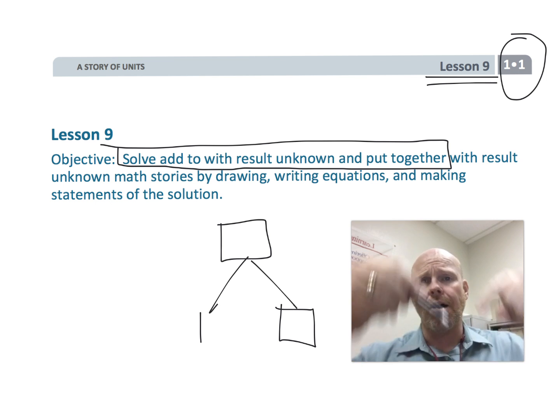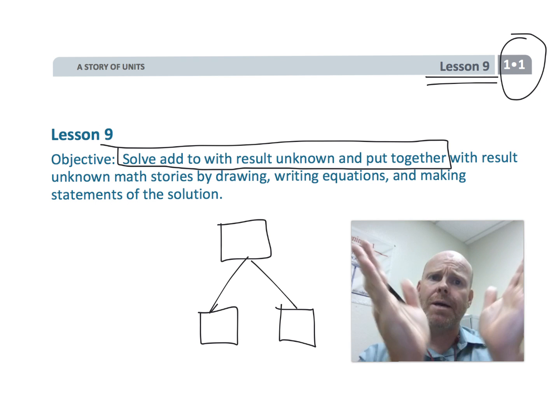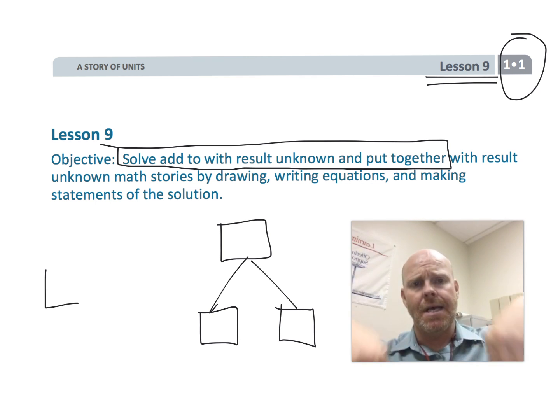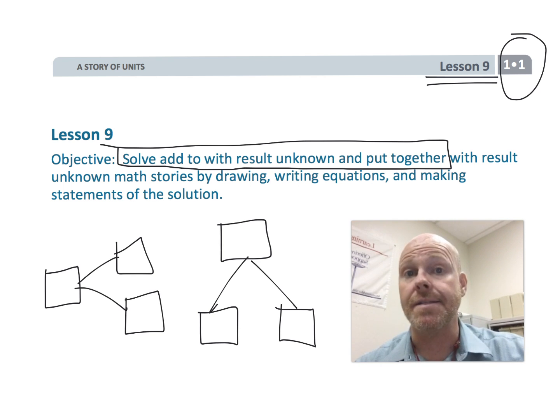In Eureka Math, they call it the number bond system where we have the total and then the two parts breaking off from it, and sometimes it's going up and down, sometimes it's side to side, and so this is just more practice of that concept.